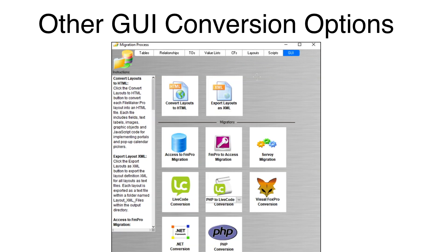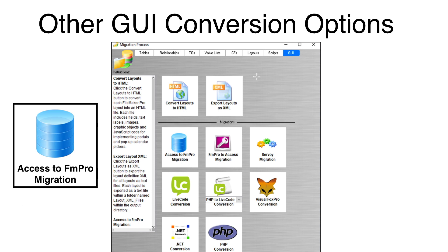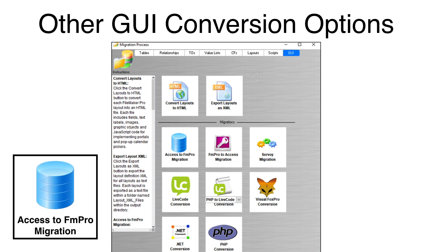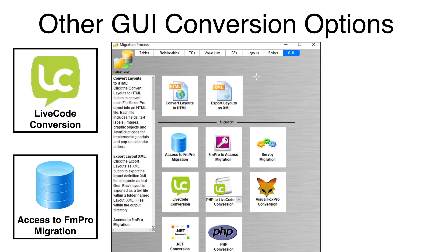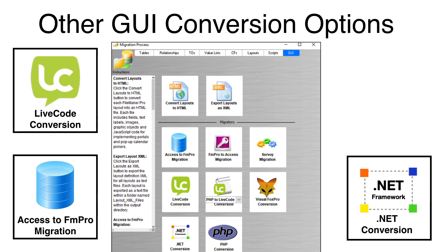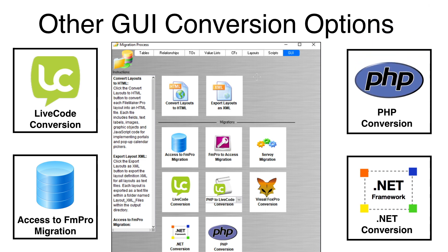This video playlist primarily shows the conversion from Access to FileMaker Pro. FMPro Migrator also supports additional direct conversions without requiring a conversion into FileMaker. These conversions include LiveCode desktop, mobile, and web applications, .NET desktop applications, and PHP MySQL web applications.